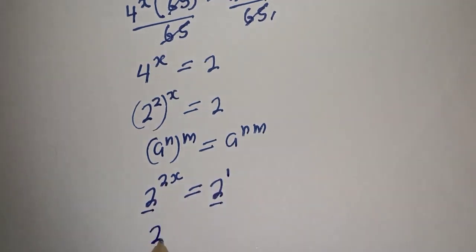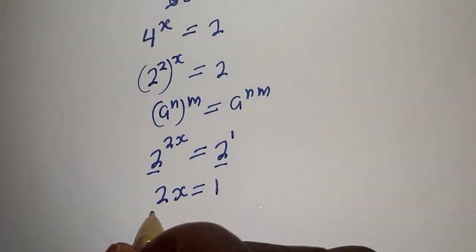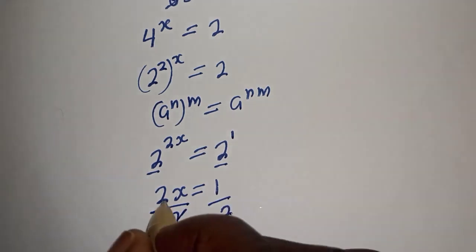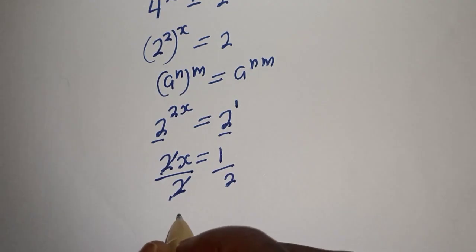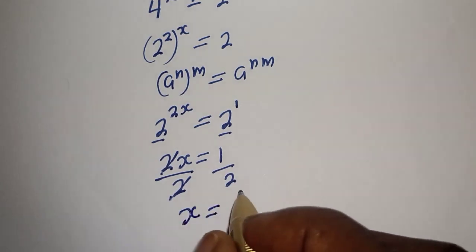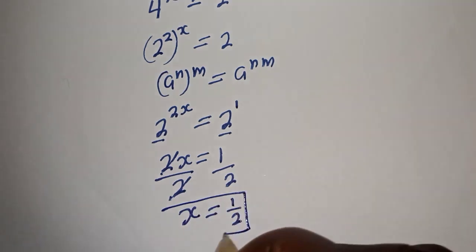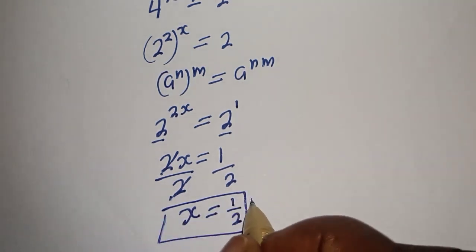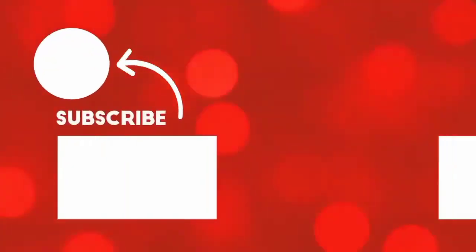Therefore 2s is equal to 1. Dividing both sides by 2, s is equal to 1 over 2. This is the final answer. Before you leave, like, share, comment and subscribe. Thank you, bye bye.